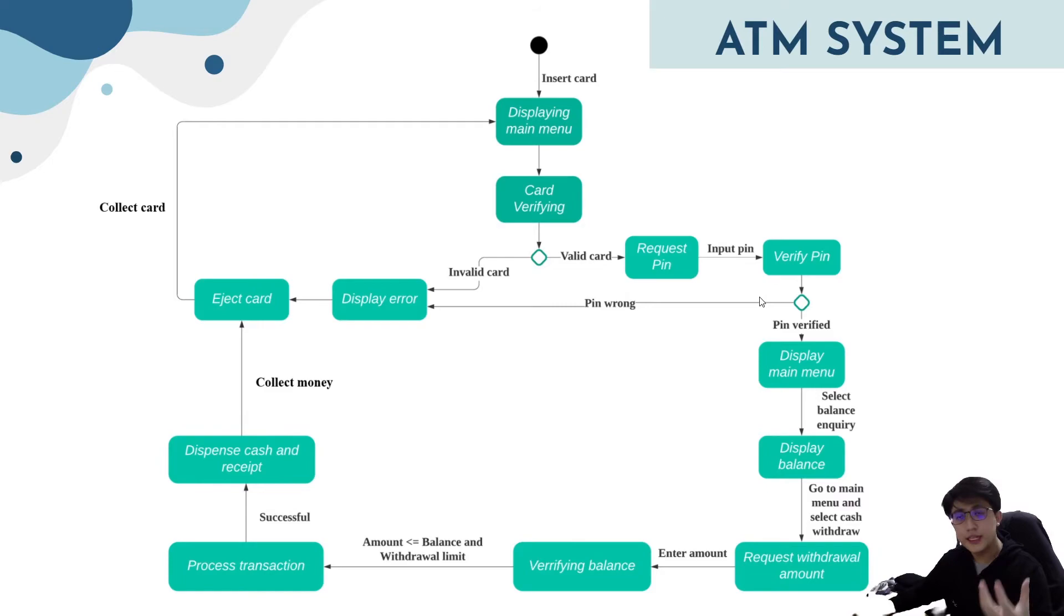In the case where the PIN provided is correct, the transaction can be proceeded where a main menu will be displayed to the user so they can choose whatever transaction they want to proceed. Over here, we describe a simple balance enquiry transaction. If the user paid the balance enquiry, the ATM machine will display the balance of the user in the bank. Soon after that, the user will be dismissed and be provided to the main menu where they can select another transaction they wish to carry out. But at this case, they can select a request withdrawal around. They can withdraw an amount of money.